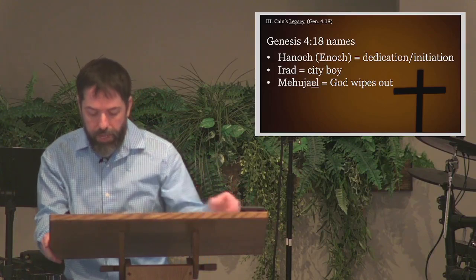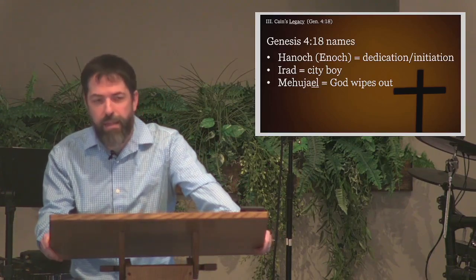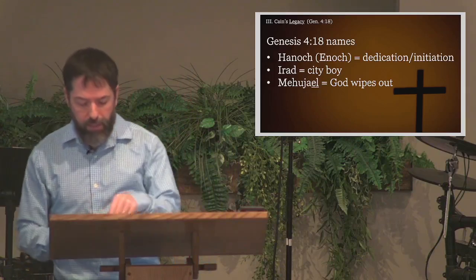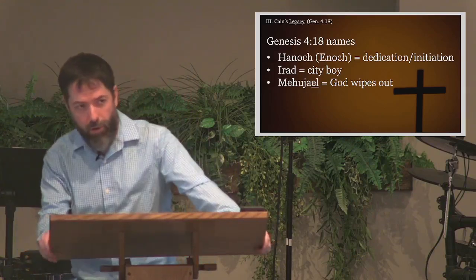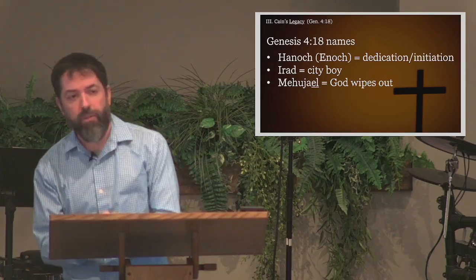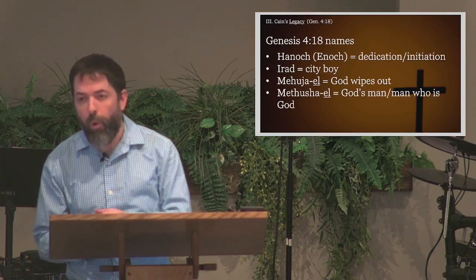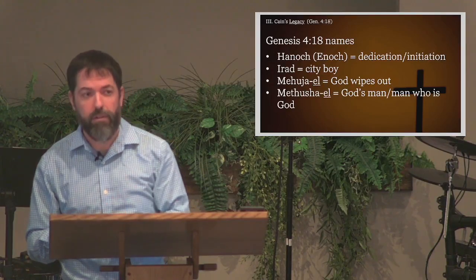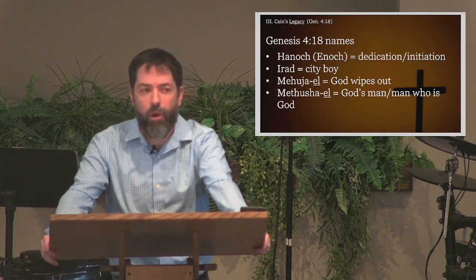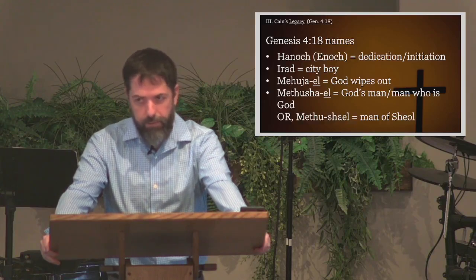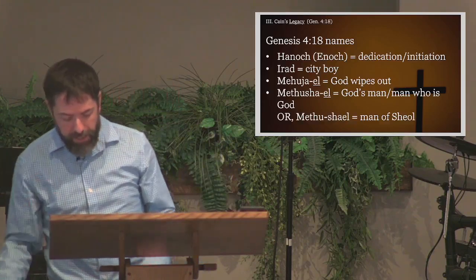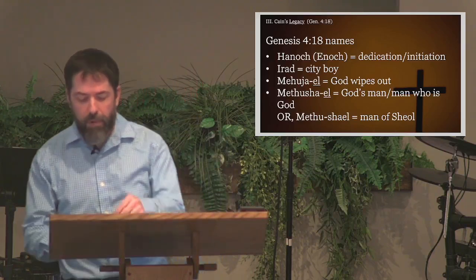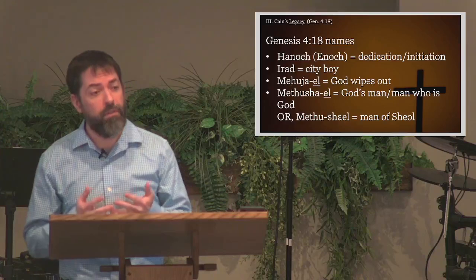Mahujael names his son Methushael. This name also has ambiguity. The last two letters could be taken as referring to El—that is, God—and if so, his name could mean 'God's man' or 'man of God.' Or it could mean, more nefariously, 'the man who is God,' expressing a hope that this son would become a God. But if the ending is actually Sha'el instead of just El, then we may have the idea 'man of Sheol'—a grave man, or undertaker, might be the idea—associating the boy with death, perhaps unwittingly reflecting their existence as dead men walking, since they live apart from the presence of the true God.